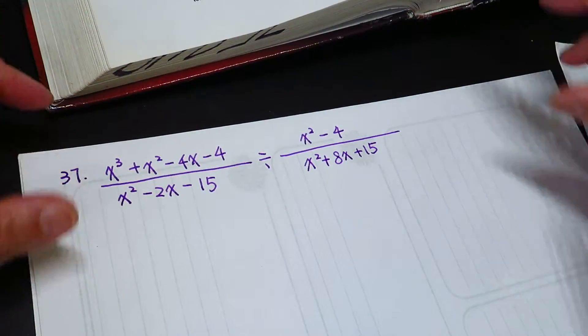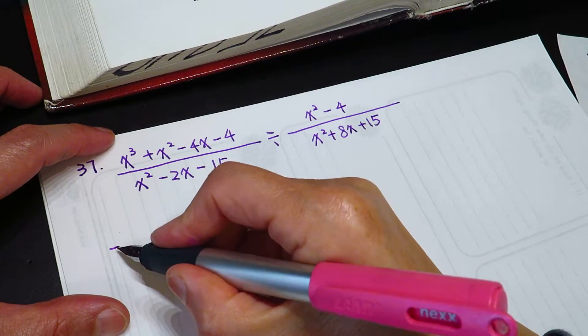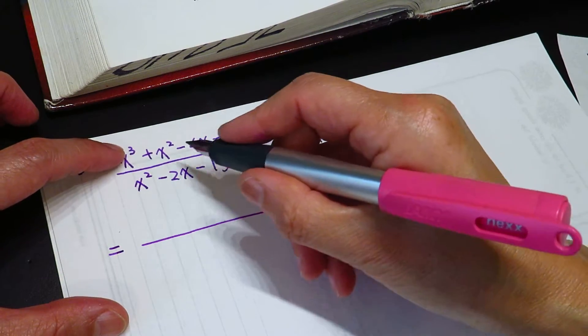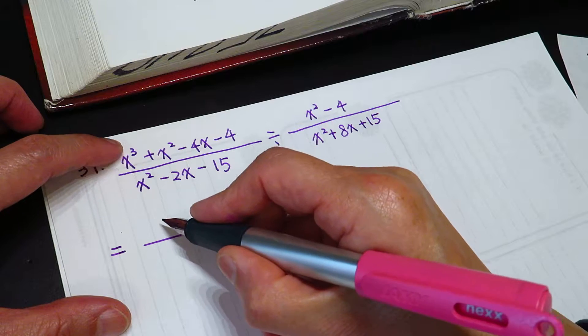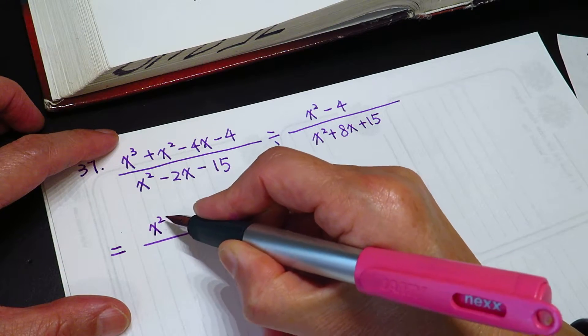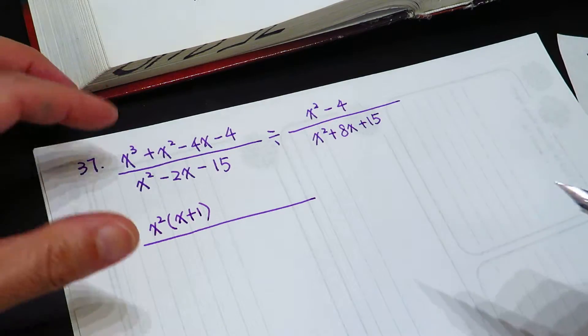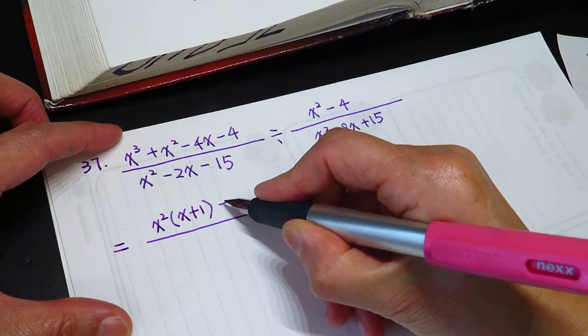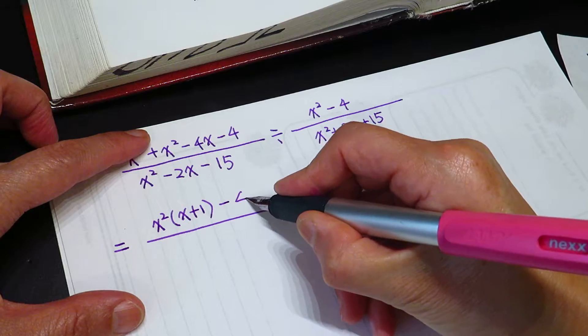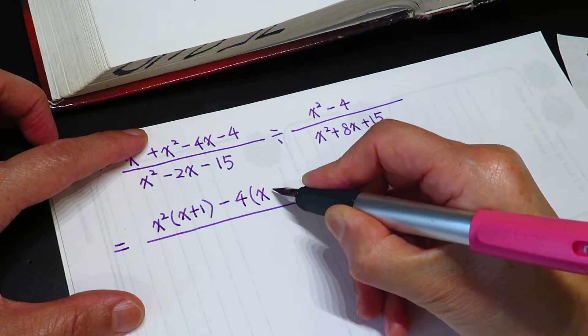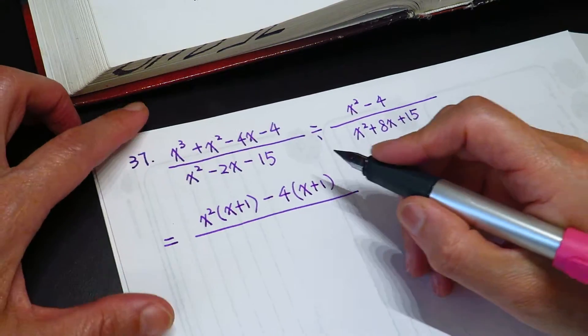Okay, so we will do the first. We take out x plus 1, so x square times x plus 1. We do it step by step minus 4 times x plus 1. And this